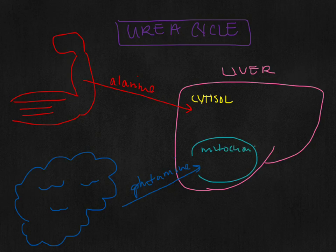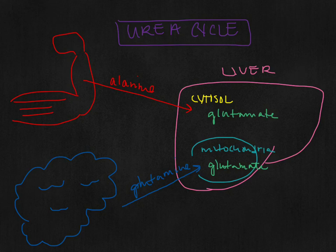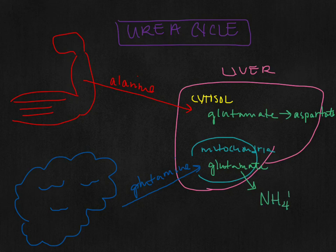Once alanine and glutamine get into the liver and the liver's mitochondria, they're both converted through aminotransferases into glutamate. Now, this is really important — the liver only wants to deal with glutamate, and these two different glutamates are going to be handled differently. The one in the cytosol is then transferred to aspartate, and the one in the mitochondria is converted into free-floating ammonia.